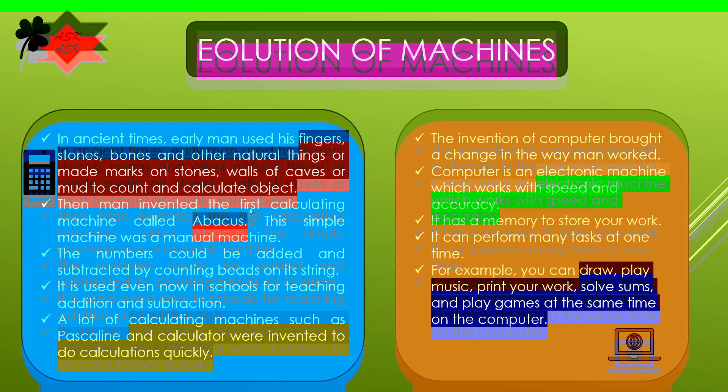Then man invented the first calculating machine called abacus. This simple manual machine could add and subtract numbers by counting beads on its strings. It is still used in schools for teaching addition and subtraction.